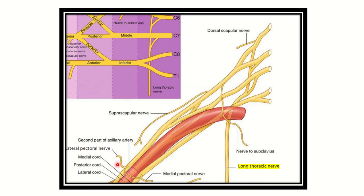Here we can see the long thoracic nerve. It arises from the brachial plexus — we know the brachial plexus has five parts, one of them is the root. From the root, the long thoracic nerve arises. The root values are cervical five, cervical six, and cervical seven.